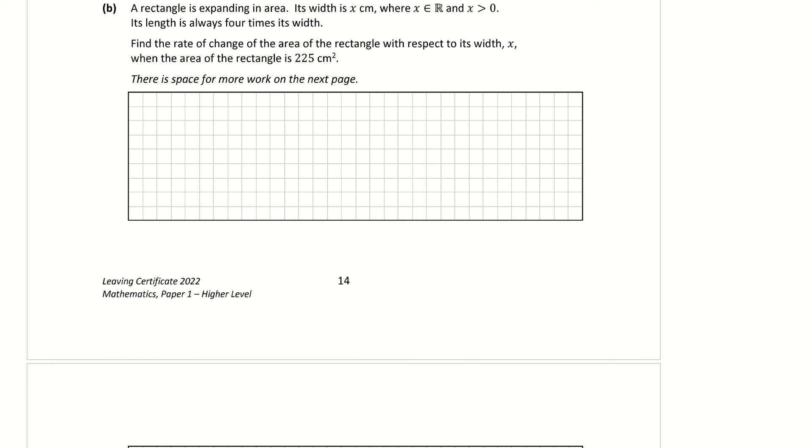Part B. A rectangle is expanding in area. Its width is x centimeters. Its length is always 4 times its width. Find the rate of change of the area of the rectangle with respect to this width x when the area of the rectangle is 225 centimeters squared. So first thing I'm going to do here is draw out our rectangle. So let's look at it out here actually to the side. So I have my rectangle here. And what do I know about it? I know its width is x. And then they tell me that the length is always 4 times its width. So 4 times its width is 4 times x. So that's basically my rectangle.